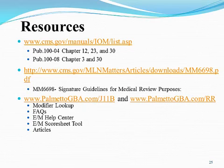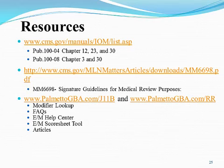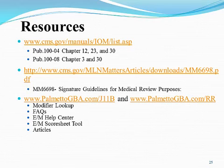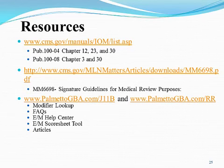Our Palmetto GBA websites for J11 and Railroad Medicare are available, along with the Modifier Lookup Tool. The E&M Help Center is important for billing E&M codes — it houses everything in one place: frequently asked questions, articles, a medical review section, and E&M weekly tips. There are a lot of gray areas in E&M and we try to capture those in articles and FAQs.